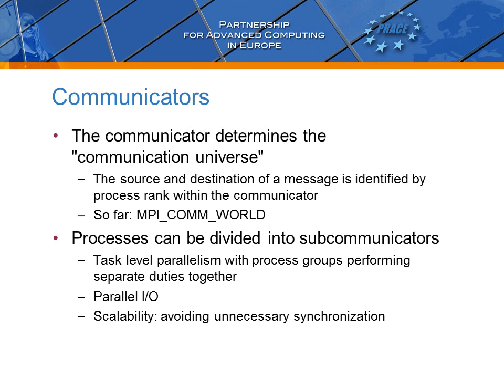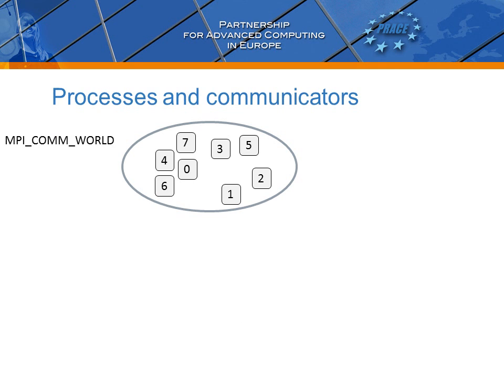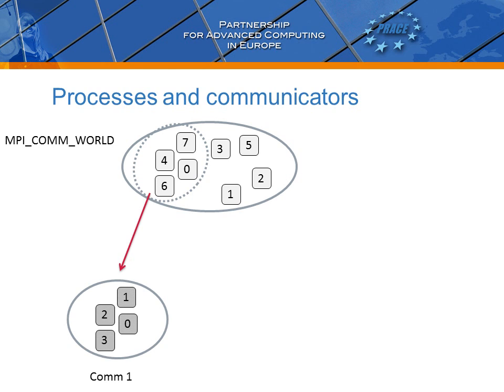Examples of these cases include task-level parallelism with process groups performing separate duties together, realising parallel input and output with dedicated IO tasks, and improving scalability by avoiding unnecessary synchronisation. As an example, we could group four ranks in MPI_Comm_World and form a new communicator, let's call it comm_1. Note that the numbering restarts from 0, meaning tasks will be assigned a different rank ID in comm_1 compared to their IDs in MPI_Comm_World.